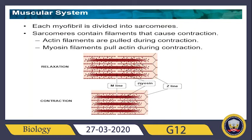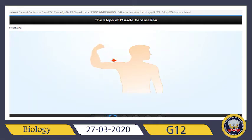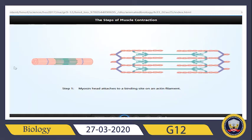Looking at the diagram: inside the muscle we find muscle fiber, the muscle fiber is composed of myofibrils, myofibrils are composed of sarcomeres, and the sarcomere contains the Z line and M line. When we perform any kind of physical activity, the sarcomere is contracting.